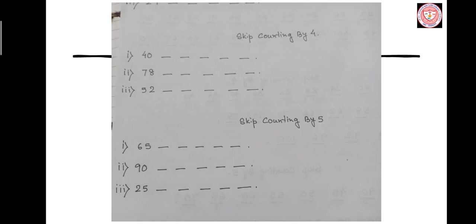Skip counting by 4: Number 1 — after 40, which numbers come? Number 2 — after 78, which numbers come? Number 3 — after 52, which numbers come? Skip counting by 5: Number 1 — after 65, which numbers come? Number 2 — after 90, which numbers come? Number 3 — after 25, which numbers come?